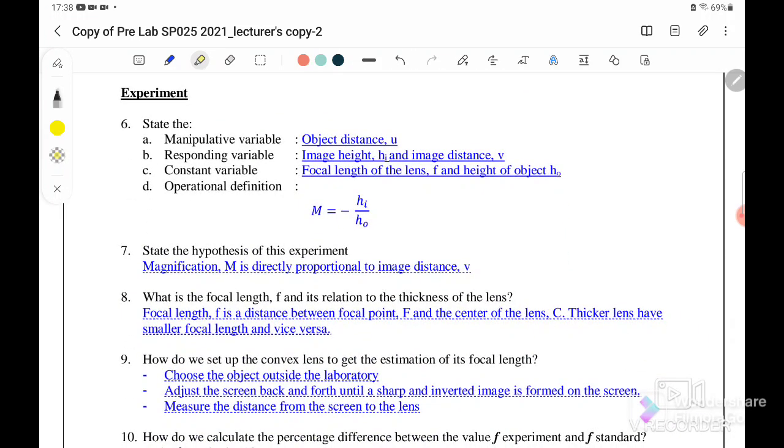Next, we go to experiment. Question number six: the manipulative variable is the object distance, the responding variable is the image distance, constant variable is the focal length and the height of the object. Then the operational definition is M equals negative h_i over h_o.